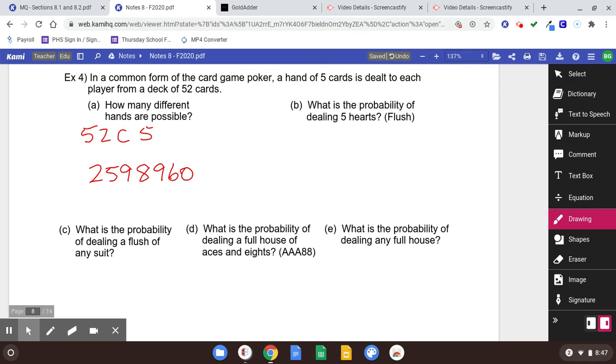What's the probability of dealing five hearts? It's called a flush when you get five of the same suit. But this problem specifically calls for five hearts. So notice it's a probability question this time. Probability is part over total.